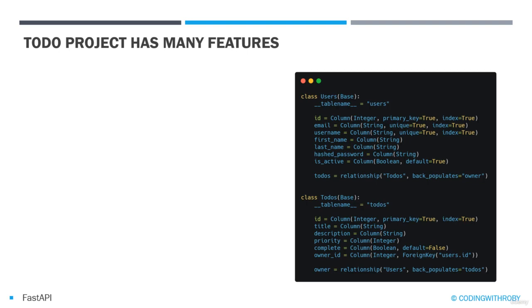Our other table will be a table for our to-do's, which will have an ID, title, description, priority, complete, and a foreign key column of owner ID.